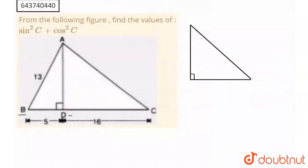The question says: from the following figure, find the value of sin²C plus cos²C. Here we have triangle ABD and triangle ACD. To find the value of cos²C and sin²C, the main triangle in use is triangle ADC.